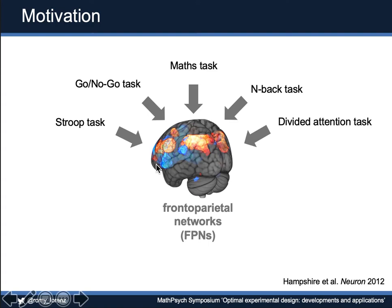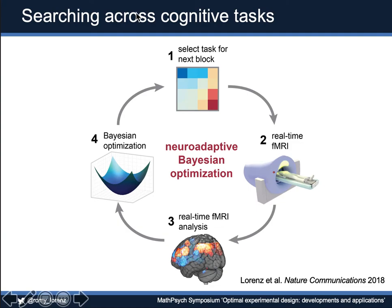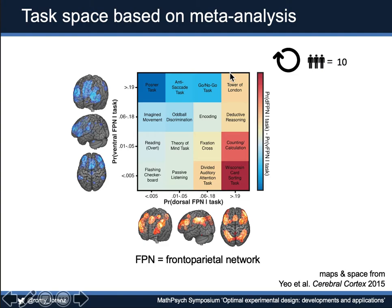A conventional paradigm would just expose a subject to one condition and draw inferences, but we want to draw inferences taking all those cognitive tasks into account. So we search across many different cognitive tasks in a closed-loop fashion. We designed a large task space consisting of 16 different tasks, searching through this task space in real time with the idea of trying to dissociate these networks — activating one while deactivating the other and vice versa.